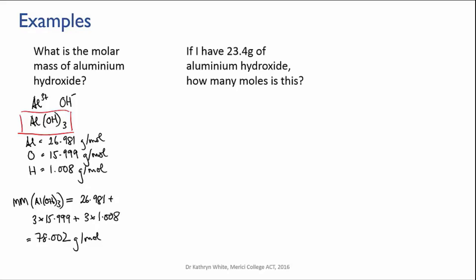So first of all, write down what you know. You know that the mass is 23.4 grams. You also know the molar mass of aluminum hydroxide because we've just calculated it. You might come at a problem like this cold and not know the molar mass straight away, but it's always something that you can calculate as long as you've got a periodic table handy.